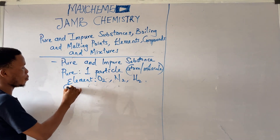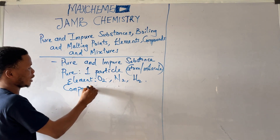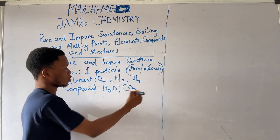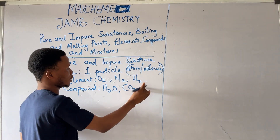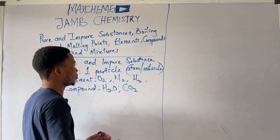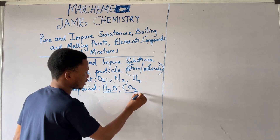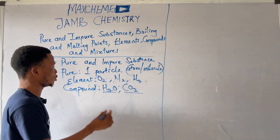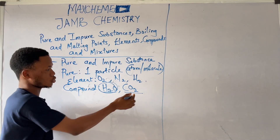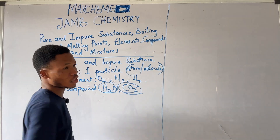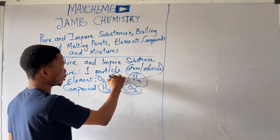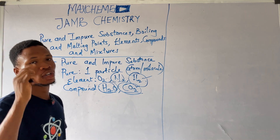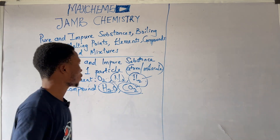We can have compounds too, like H2O, like CO2. These substances have just one type of particle in them — water particles or carbon dioxide particles. So pure substances are substances that have just one particle in them.